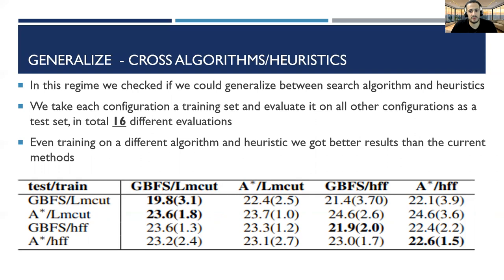As we assumed, the best results come when we use the same configuration in train and test. When we change the planner and the heuristic, we got the worst result. By changing only the heuristic, we get second best results.